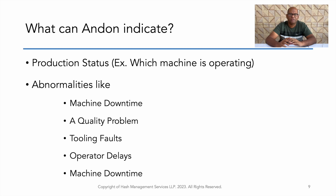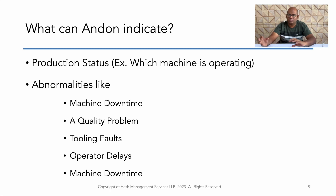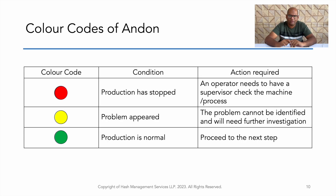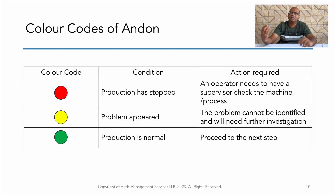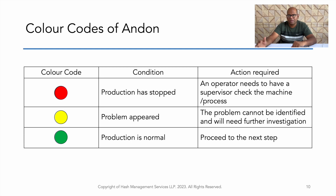What can Andon indicate? It can highlight production status, machine downtime, quality issues, tooling defects, and delays due to operator availability, machine availability, or material issues. Regarding color codes: green means production is running normally as planned with no constraints; yellow means a small issue has appeared and corrective and preventive action is needed now before it becomes a big issue; red means there is a problem and the machine is stopped — unless corrective and preventive action is taken, it will not move forward.